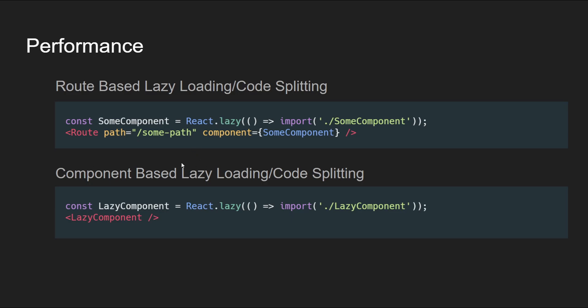The second one is component-based lazy loading. This differs from route-based lazy loading in that there could be multiple components in a single route. First lazy load the route, then lazy load the components based on when they need to be rendered based on user interaction. Similar to route-based but at a granular component level, it loads components as needed rather than at startup, which is particularly beneficial for large components or those with heavy dependencies.